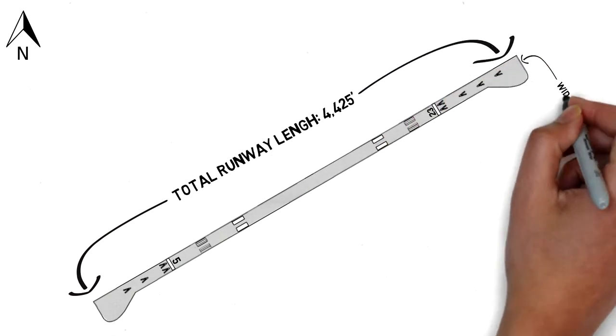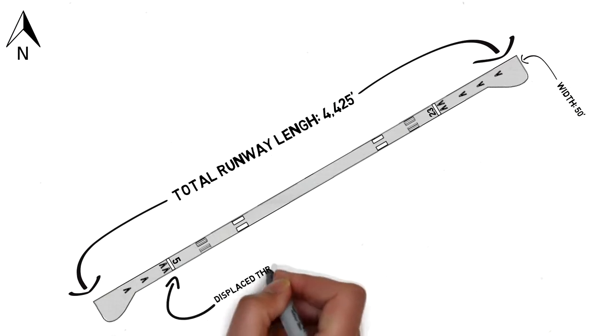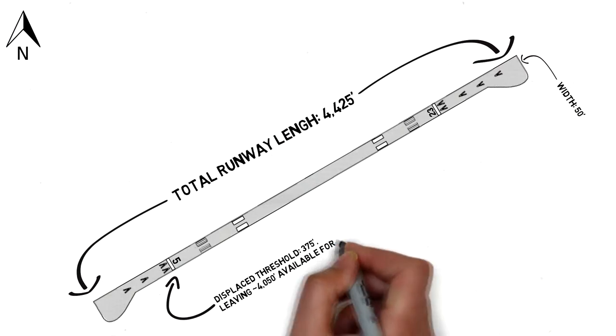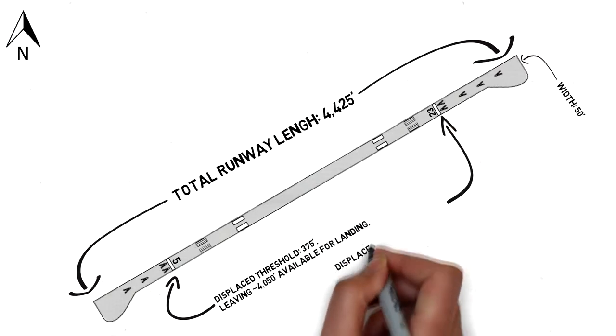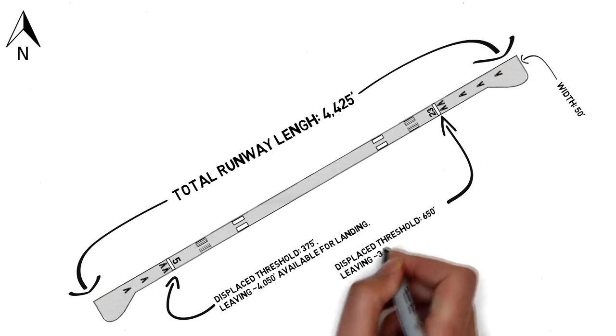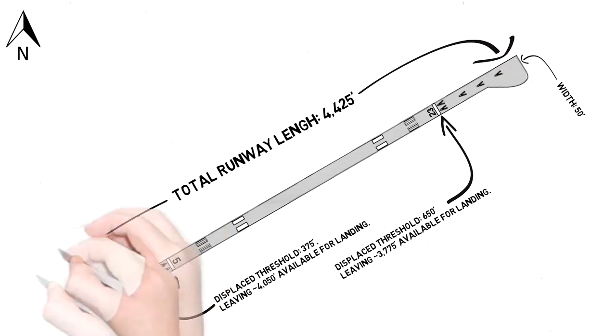Landing to the northeast on runway 5, there's a displaced threshold of 375 feet, leaving approximately 4,050 feet available for landing. Landing to the southwest, runway 23 has a displaced threshold of about 650 feet, leaving approximately 3,775 feet available for landing.